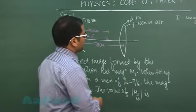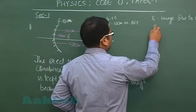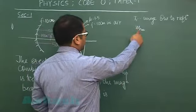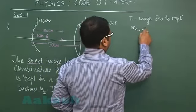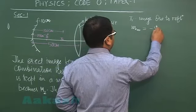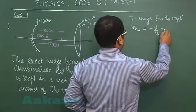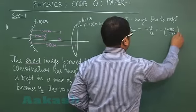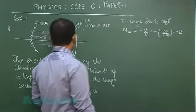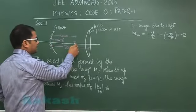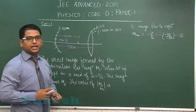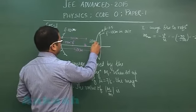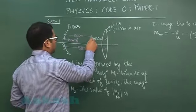For the mirror, the magnification formula is -V/U, which is -(-30)/(-15), that comes out to be -2. Now this image will be acting as object for the lens and the value is quite good enough.